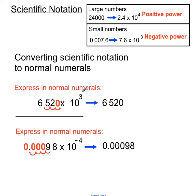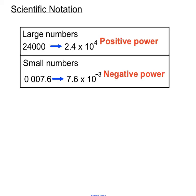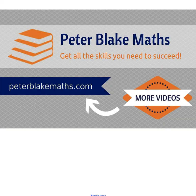So when there is a positive power we move the decimal point to the right, and because this is a negative power we move the decimal point 4 jumps to the left, expecting a small number as our final result. Remember with scientific notation: large numbers have positive powers, and small 0-point type numbers end up with negative powers. I hope that helps — have a look at the video a second time if you need to. All the best with your work with scientific notation. Videos by Peter Blake from PeterBlakeMath.com. Thanks for listening.